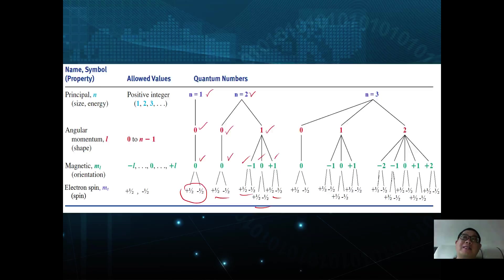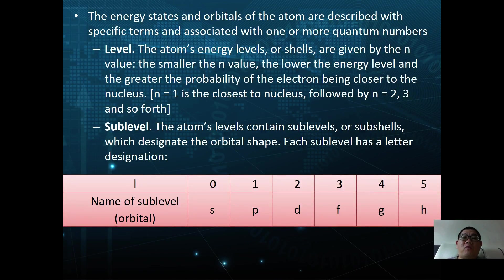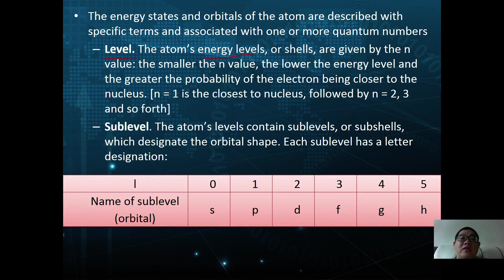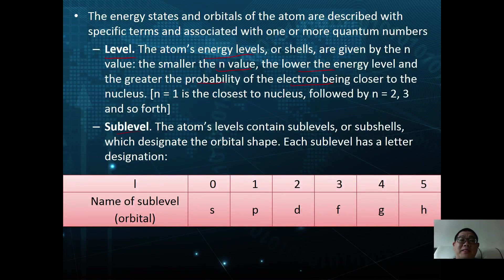Now let's convert this into a more relatable method where energy states and orbitals are described using quantum numbers. The energy levels are the atomic energy levels of shells given by the value of n — the smaller the value of n, the lower the energy level and the greater the probability of finding the electron closer to the nucleus. Sub-levels correspond to l, the angular momentum quantum number, and instead of using integers, we designate orbital shapes with letters — each sub-level has a letter designation.